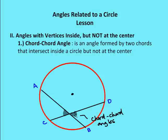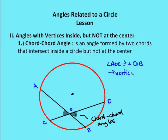This is my chord-chord angle here. We'll call this angle AOB and angle AOC — those are my two chord-chord angles. I know that these two angles are congruent because they are vertical angles. So angle AOC is going to be congruent to angle DOB, because they are both vertical angles. So what else do we know about the chord-chord angle?